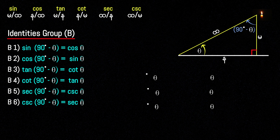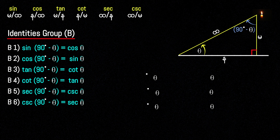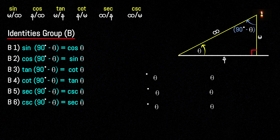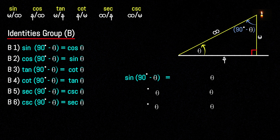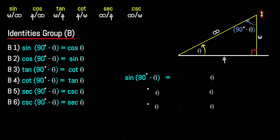90 degrees minus theta. Now I think about tan. Finally, sine of 90 degrees minus theta. If we look at the line, we hope that the line is in the 25th — so the line is at 90 degrees minus the line.